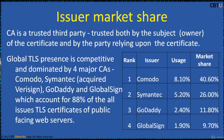The certificate market is booming and demanding. Here is the market share: a CA is a trusted third party trusted both by the owner of the certificate and by the party relying upon the certificate. Global TLS presence is competitive and dominated by four major CAs: Comodo, Symantec (which acquired VeriSign), GoDaddy, and GlobalSign. These four account for 88% of all TLS certificates of public-facing web servers.